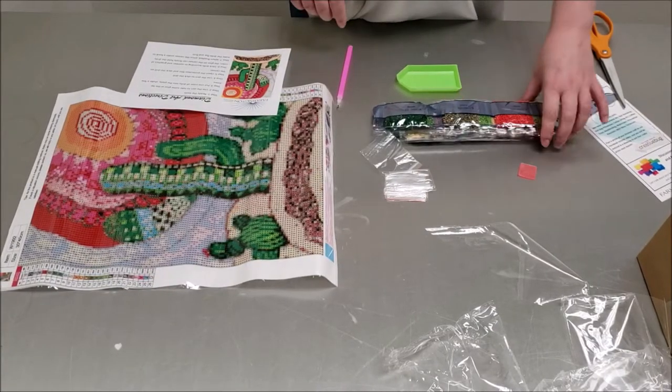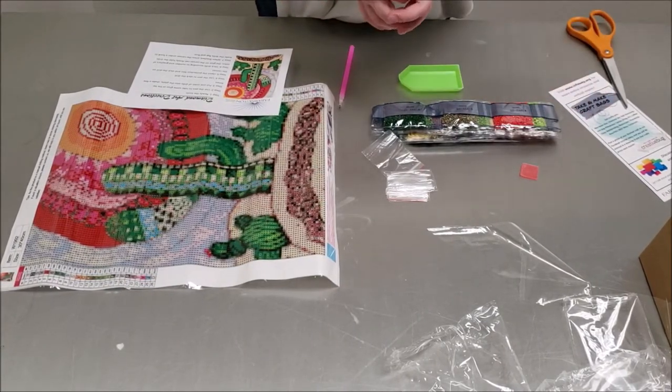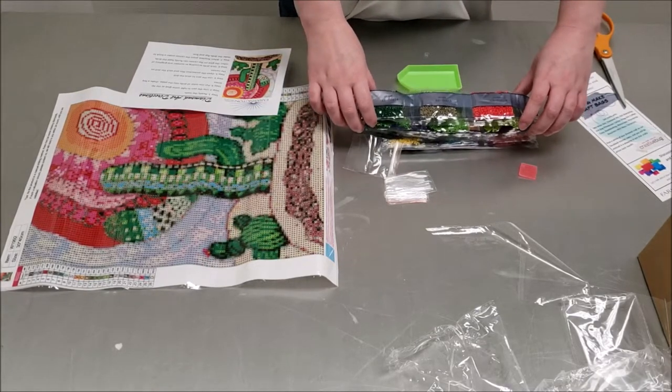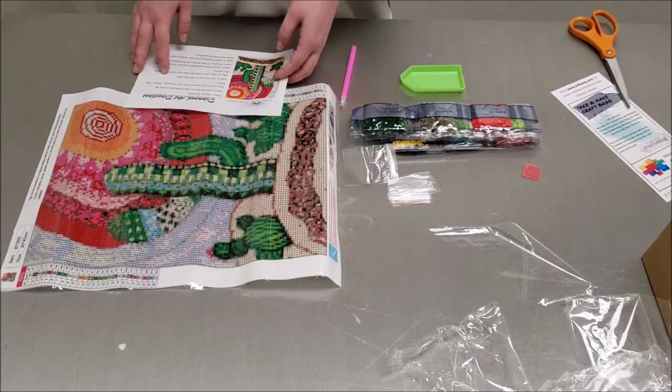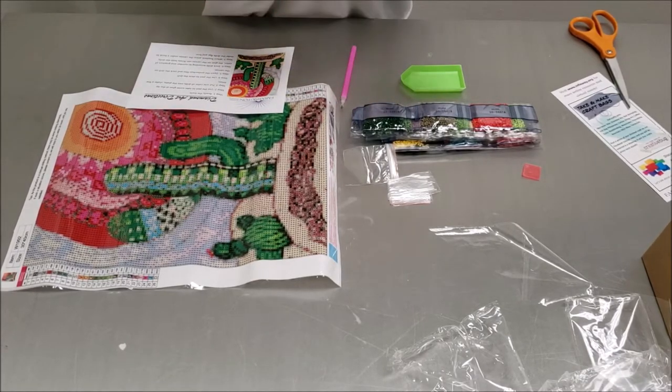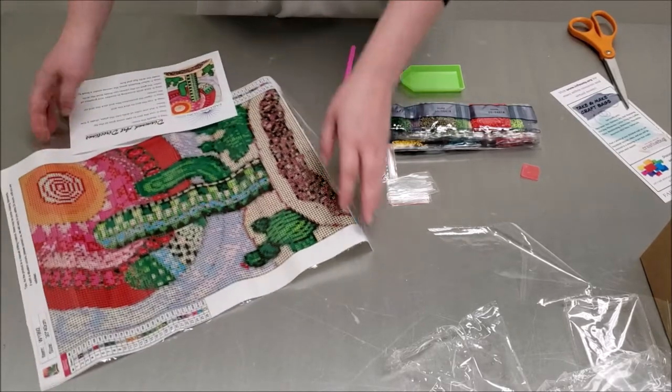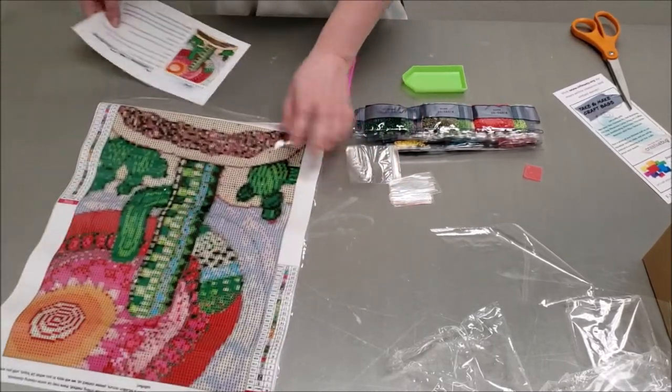And then what I like to do is I have little dishes that I pour each diamond color in. But you can just go one color at a time, however you want to do this. So we're going to start with one color and I'm going to start at the bottom.